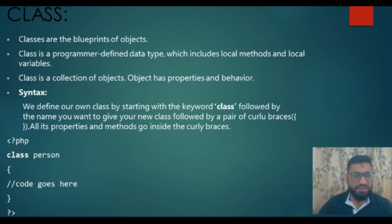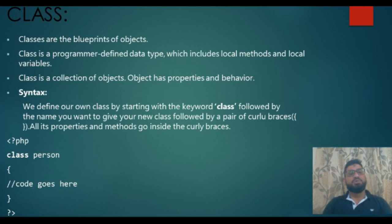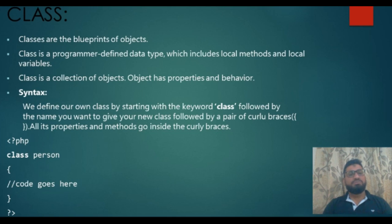The first topic that we have is Classes. Classes are the blueprint of object. Classes is a programmer-defined data type which includes local methods and local variables. Classes are a collection of objects with properties and behavior.